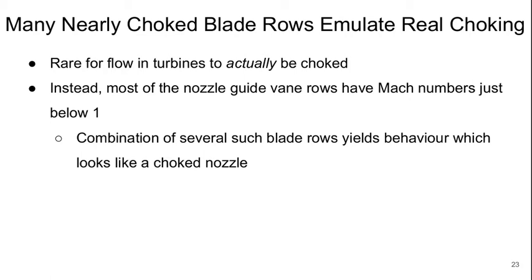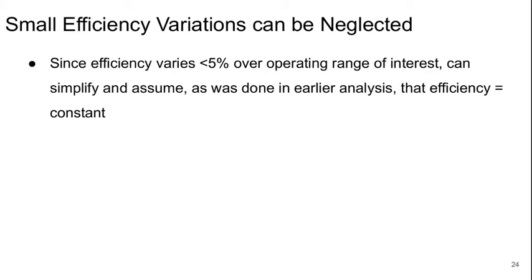It's actually rare to have truly choked flow in turbines, but with many blade rows very close to being choked, from the perspective of other components in the engine this essentially emulates real choking. Guide vanes typically have Mach numbers just below one, and the combination of several such blade rows yields basically choked behavior. We can neglect the small variations in efficiency over operating ranges and assume, as we've done earlier, that efficiency is constant in turbines.